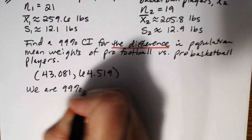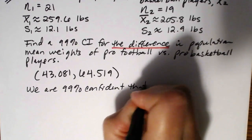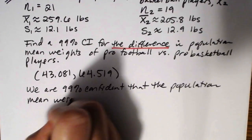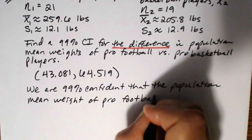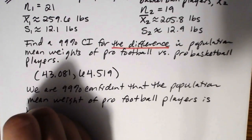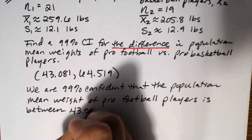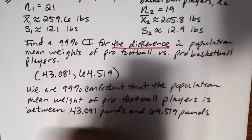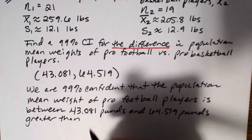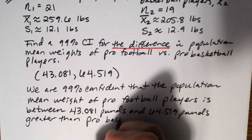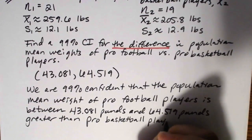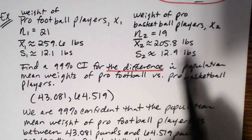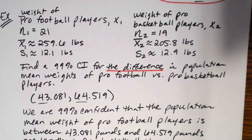Here's what we are actually saying: we are 99% confident that the population mean weight of pro football players is between 43.081 pounds and 64.519 pounds greater than pro basketball players. This is estimating the difference in weights of the two groups, and that difference is between 43 and about 64 pounds.